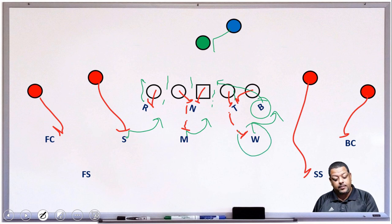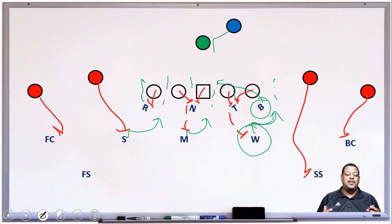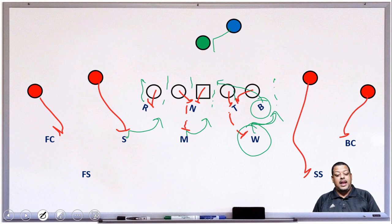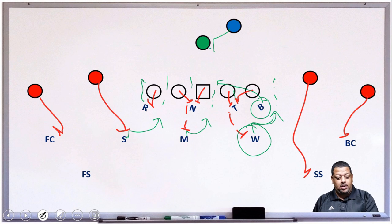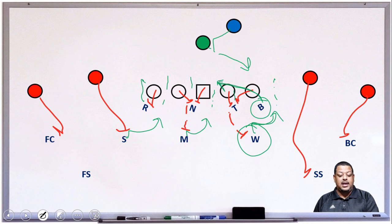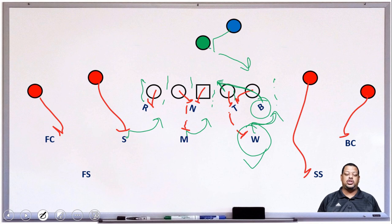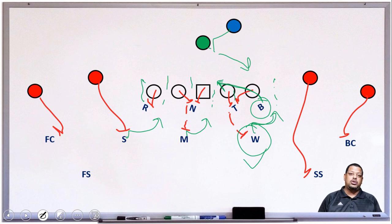The wheel linebacker is super important — he rocks back and takes care of the C-gap. All our gaps are covered and we're playing into the characteristics of the play. If the quarterback keeps the ball on the zone read, that's fine — we want him to keep it because we're knifing down. The wheel linebacker is responsible for the quarterback if he keeps it. Now let's go to film and walk through this so you can see it in action.